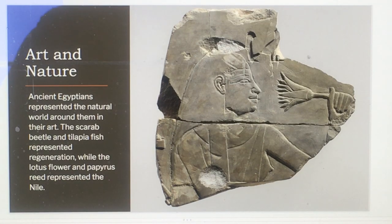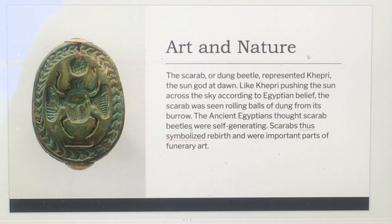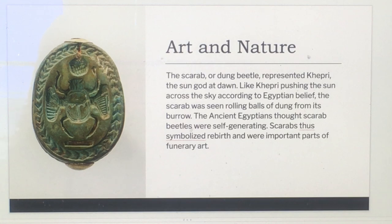Ancient Egyptians represented the natural world in their art. The scarab beetle and tilapia fish represented regeneration, while the lotus flower and papyrus reed represented the Nile. The scarab, or dung beetle, represented Khepri, the sun god at dawn — like Khepri pushing the sun across the sky. Ancient Egyptians believed scarab beetles were self-generating, so scarabs symbolized rebirth and were important parts of funerary art.